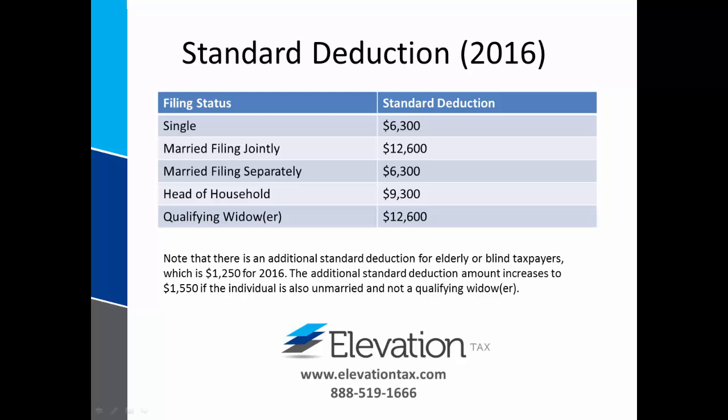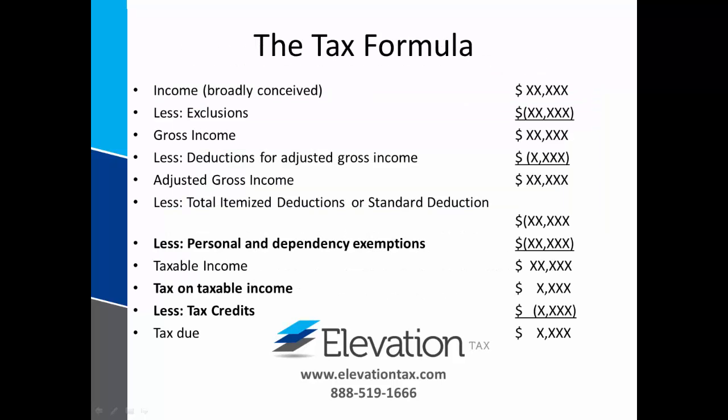The standard deduction is specified by Congress and depends on the filing status of the taxpayer. The standard deduction is to exempt a taxpayer's income up to a specified amount from federal income tax liability. A taxpayer who is age 65 or over or blind qualifies for an additional standard deduction. The amounts on this table apply to the 2016 tax year. A taxpayer will take the standard deduction unless itemizing yields a higher deduction, but will not take both.